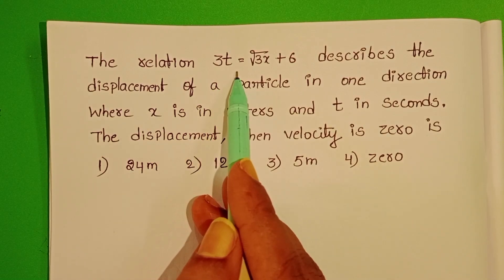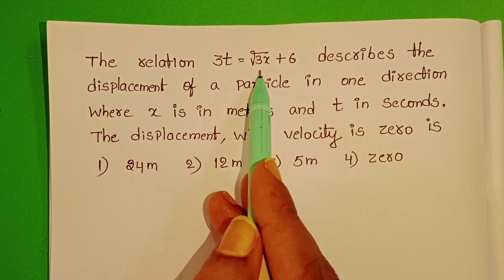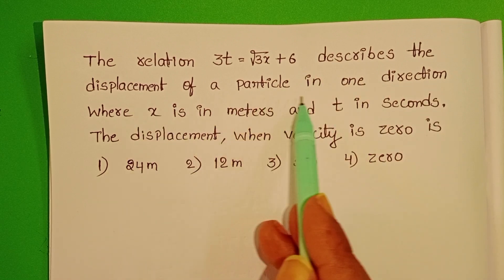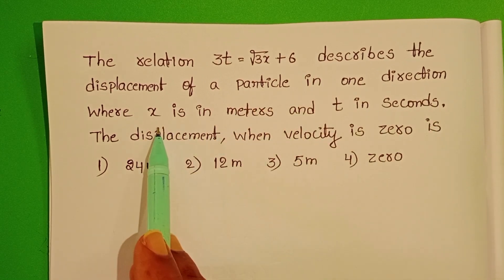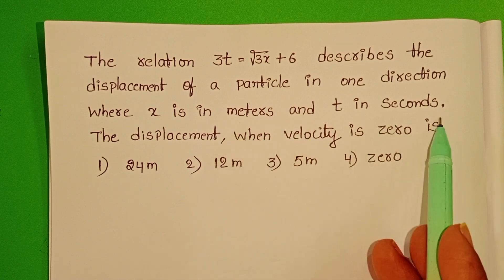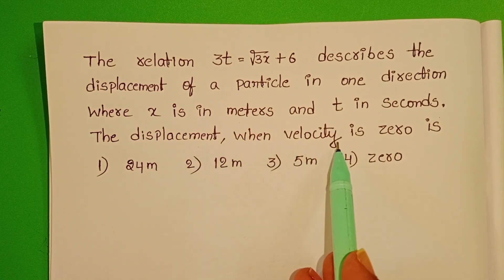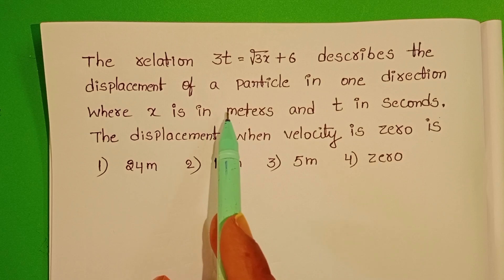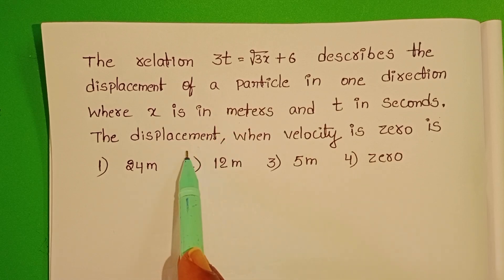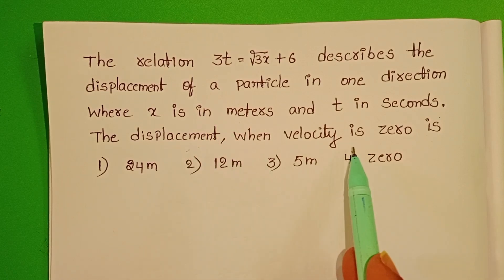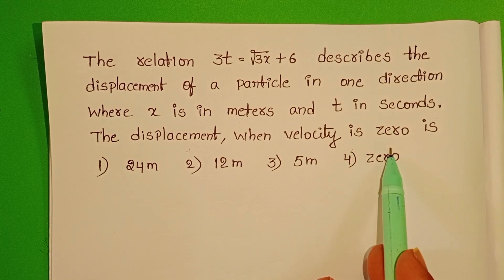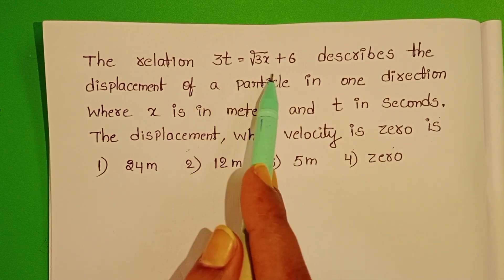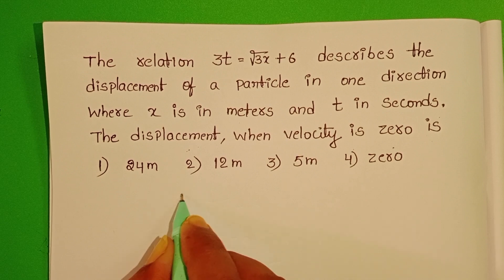The relation 3t equals square root of 3x plus 6 describes the displacement of a particle in one direction, where x is in meters and t is in seconds. The displacement when velocity is 0 is to be found. In this question, we have to find out the displacement of the particle when velocity is 0. First of all, we want velocity by using this equation. Take the given equation.